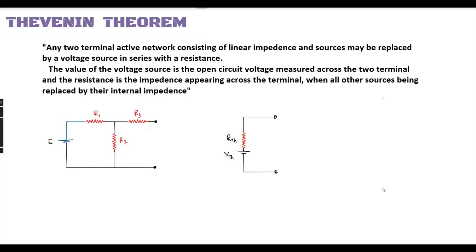The value of the voltage source is the open circuit voltage measured across the two terminals, and the resistance is the impedance appearing across the terminal when all other sources are replaced by their internal impedance.